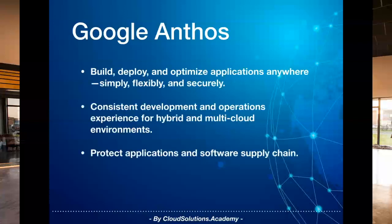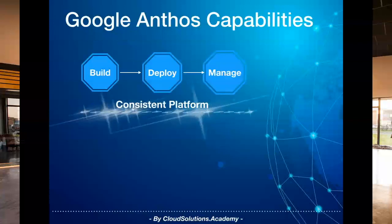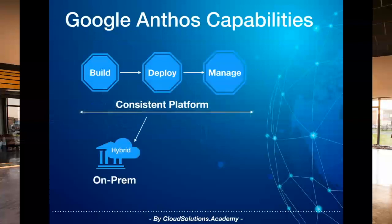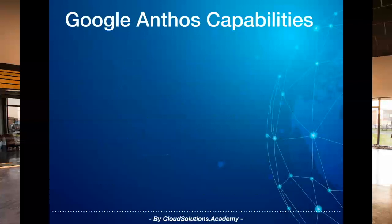From a capability perspective, Google Anthos provides three key features. First, it allows you to build, deploy, and optimize cloud applications anywhere. For on-prem customers, it provides an approach to modernize applications, leverage existing infrastructure, create cloud-native applications, and migration tools to convert virtualized machines to container-based solutions. It also allows you to run workloads on-premise and ensure data governance and regulatory requirements through centralized policies.